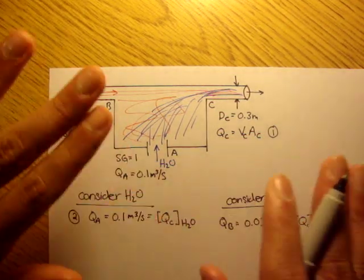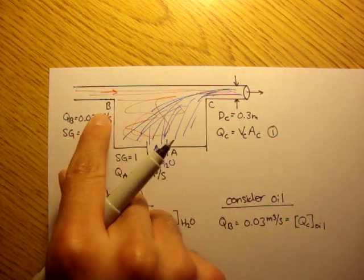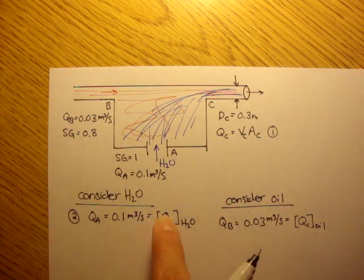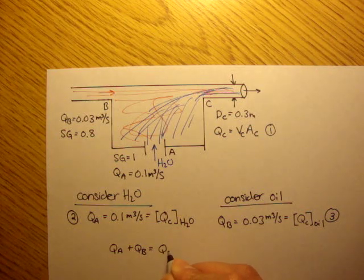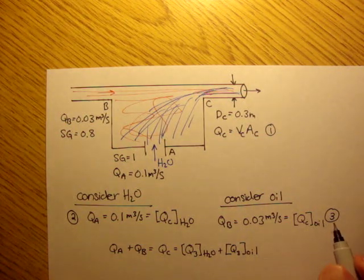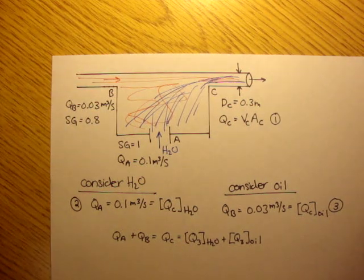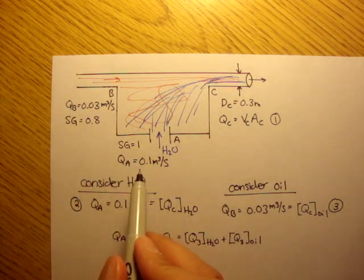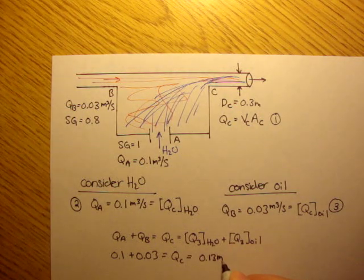Whatever comes into the system must equal whatever goes out, so QA plus QB equals QC. Adding equations 2 and 3: QA plus QB equals QC total — the water and the oil combined. QA plus QB equals what's coming out at C. Since QA is 0.1 and QB is 0.03, we get 0.1 plus 0.03 equals QC. So QC equals 0.13 meters cubed per second.